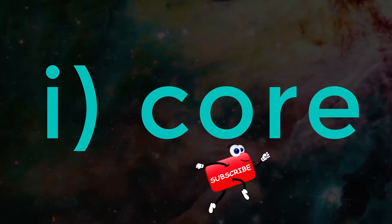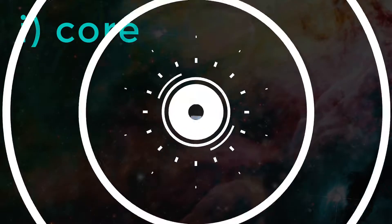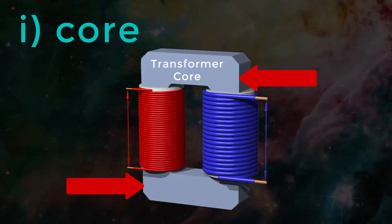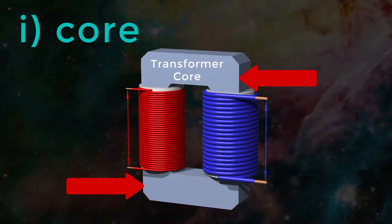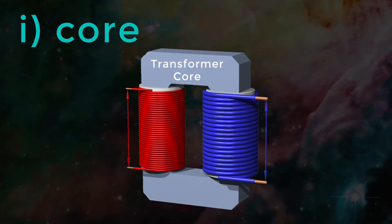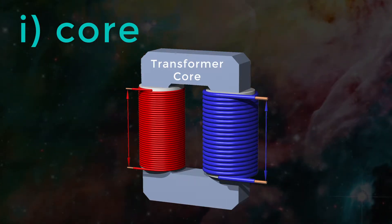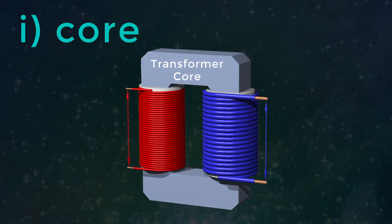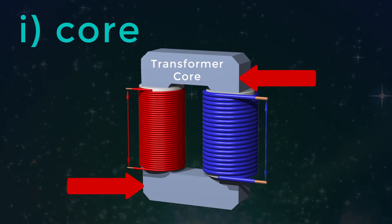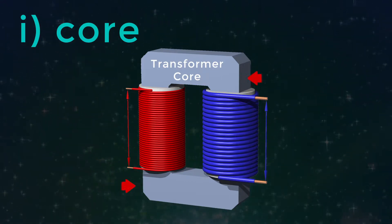Now let's look into detail about the core. The core is made of soft iron or ferrite material having high permeability, in the form of laminations properly insulated with a thin coating of insulation. It is taken in the form of laminations to avoid the setting up of eddy currents.